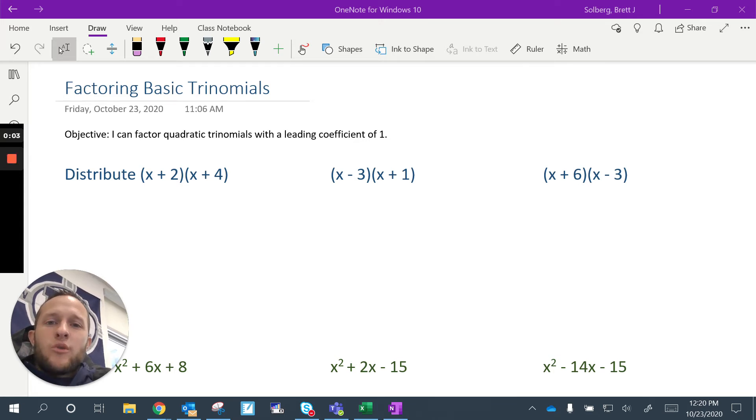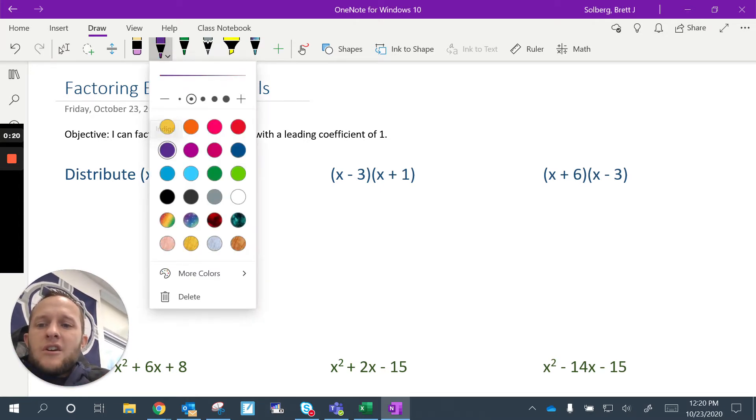Hello. Today I'm going to show you how to factor some basic trinomials. What I mean by basic trinomials is that the leading coefficient is going to be of degree 1. So when you look at it, it looks like there isn't even one there, but it's just a 1. To give you an introduction to how to do this, I'm going to show you how to distribute, which you've done before, probably many times.